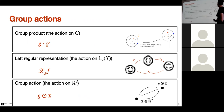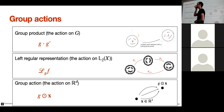To summarize: group elements transform by the group product, functions transform by the left regular representation, and an action brings a point in R² to another point in space via translation or rotation. An audience member asks whether, with pixelated images, rotating in two steps gives the same result as one rotation. The speaker clarifies that the theory is based on continuous functions on R²; for discrete images, the representation becomes finite-dimensional.